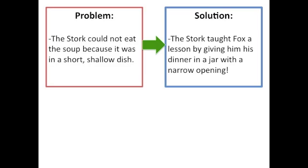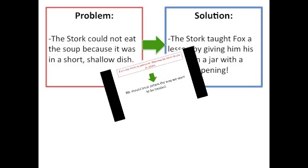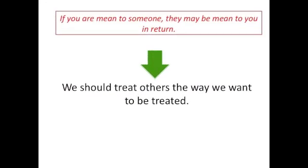After reading this story, I can see that both characters faced a problem. Can you figure out the problem of the Stork? The Stork could not eat the soup because it was in a short, shallow dish. When thinking about the solution to this problem, I can see that the Stork did the same thing to Fox. Stork gave Fox his dinner in a jar with a narrow opening. The characters in this story did not help each other like the characters in the first. After looking at the problem and solution to the story, I can tell that the author wants us to learn something. The theme or author's message was listed at the bottom of the story. Let's take a look at the theme in red. If you are mean to someone, they may be mean to you in return.